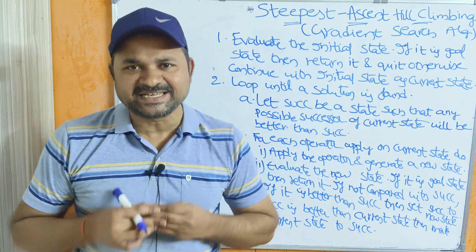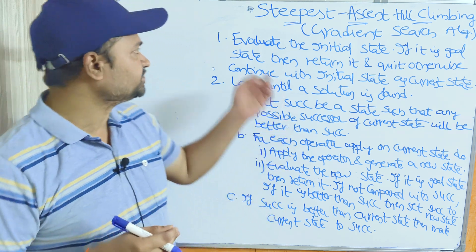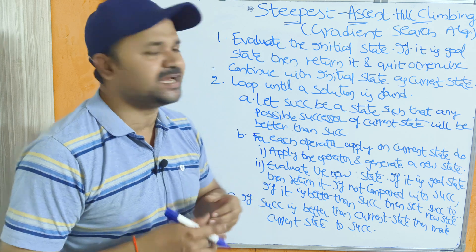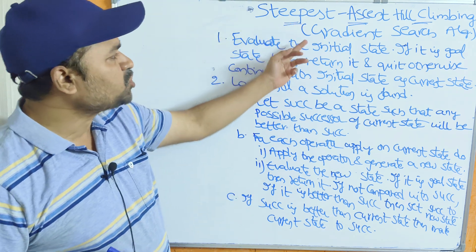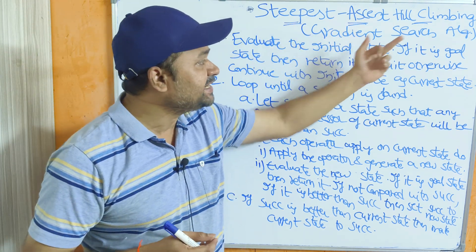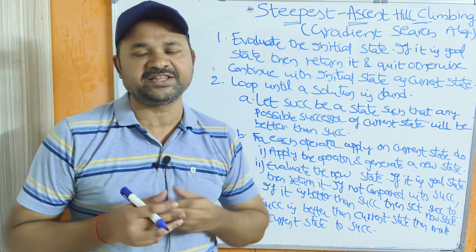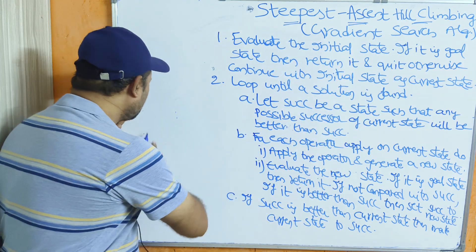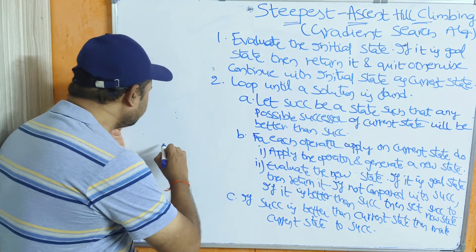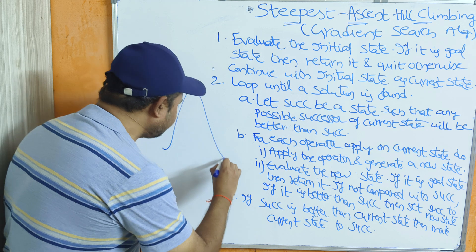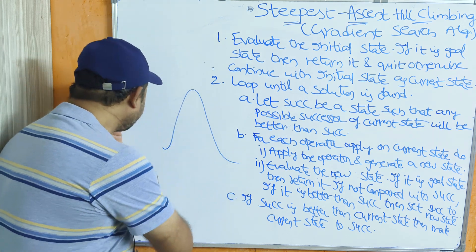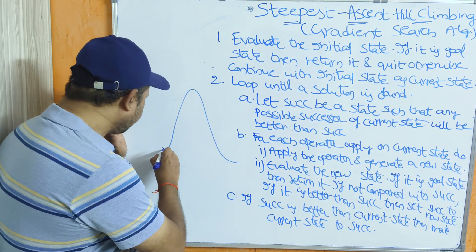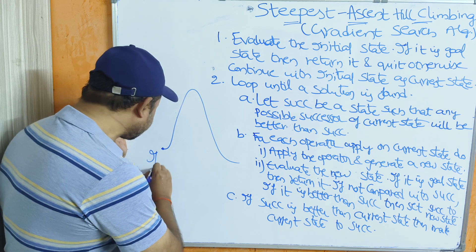Let us discuss the steepest ascent hill climbing algorithm, which can also be called the gradient search algorithm. Here our major aim is to climb the hill. Let's say we have a hill like this, with an initial state at the bottom and a goal state at the top.